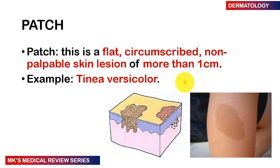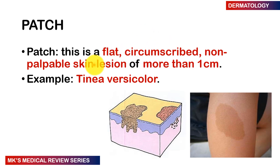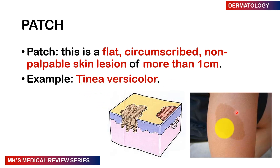A patch is the bigger variant of a macule — flat, well-circumscribed, non-palpable, but more than one centimeter in diameter. An example is tinea versicolor. Here is an example of a patch in a patient.